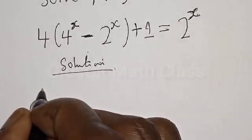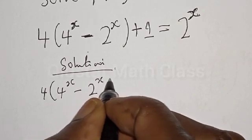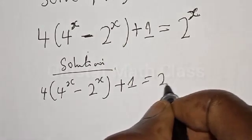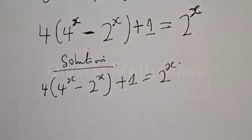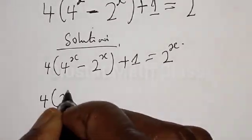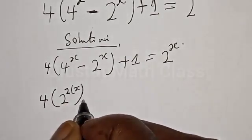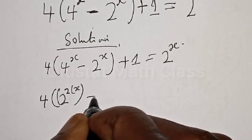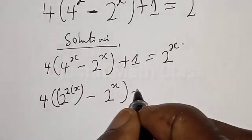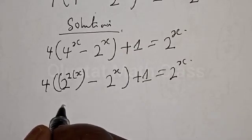The given equation is: 4 into [4 raised to power s minus 2 raised to power s] plus 1 is equal to 2 raised to power x. This can be expressed as 4 times [2 raised to power 2, then multiplied by x, minus 2 raised to power x] plus 1 equal to 2 raised to power s.